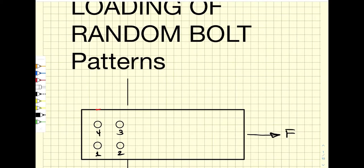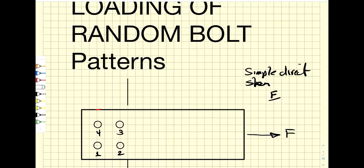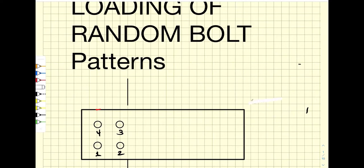If we expose that plate to a centrally loaded force, we just have simple direct shear loading of each of these bolts. The shear in each bolt is the force divided equally — with 4 bolts, we divide the force by 4 and then by the cross-sectional area π·d²/4, giving equal direct shear loading. Equal load sharing is easy to do.